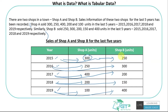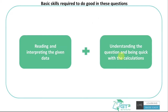So what are the basic skills required to do well in data interpretation questions? The first and foremost skill is being able to read and interpret the given data. We deal with tabular data, line graphs, bar graphs, pie charts, multiple graphs, etc. You should be able to read the data in its visualized form quickly and accurately, so that you can solve the questions better.